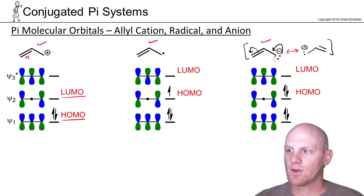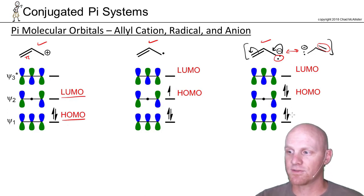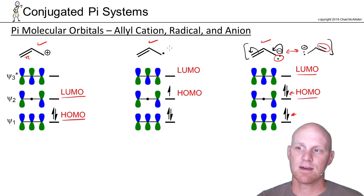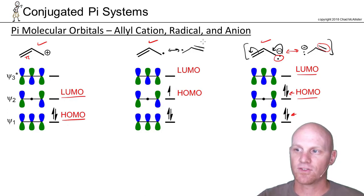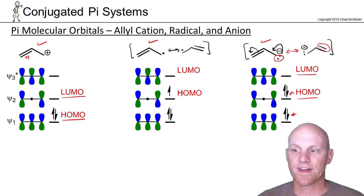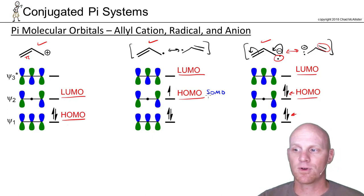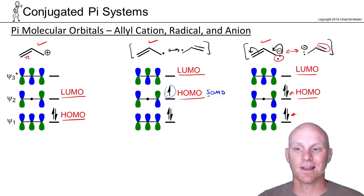The lone pair is now part of the pi system, so you actually have four electrons to fill in. You put 2 in Ψ1 and 2 in Ψ2, so Ψ2 becomes the HOMO and Ψ3 the LUMO. With the radical, once again by resonance you can see that the radical electron is actually part of the conjugated pi system. As a result, you have three electrons to fill in, so Ψ2 — the highest energy orbital that has any electrons — is the HOMO, and Ψ3 is the LUMO. Some people prefer the term SOMO for Ψ2, which stands for singly occupied molecular orbital since there's just a single electron in there, but most people prefer to still use the HOMO and LUMO convention. That's your big difference between the cation, radical, and anion for the allyl system.